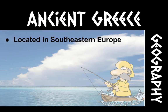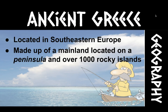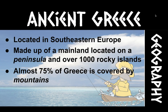I want to talk about the geography of ancient Greece. We know that it was located in southeastern Europe. It's made up of a mainland located on a peninsula, and there are over a thousand rocky islands that make up part of Greece. So technically it's also an archipelago, which means it's a series of islands. Almost 75% of Greece is covered by mountains. Do you remember ancient China? About 75% of ancient Greece is also mountainous.